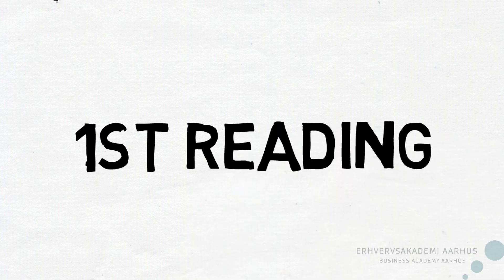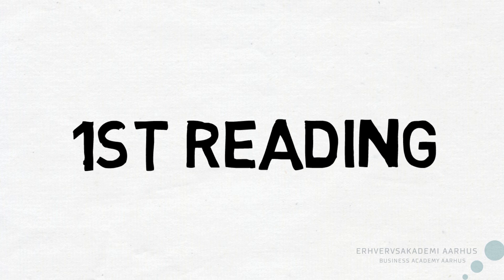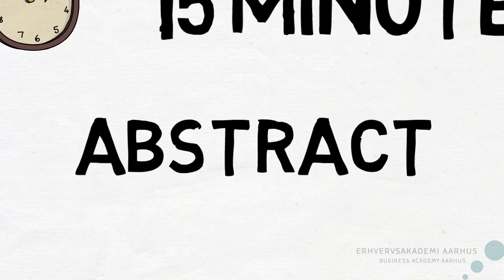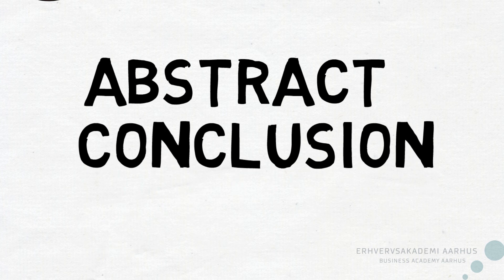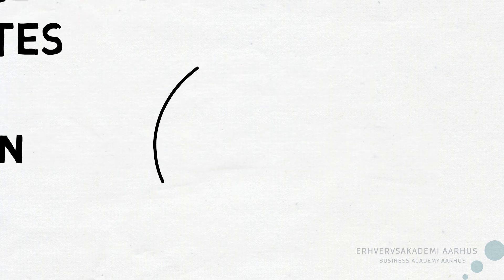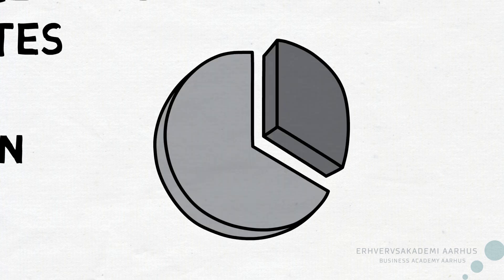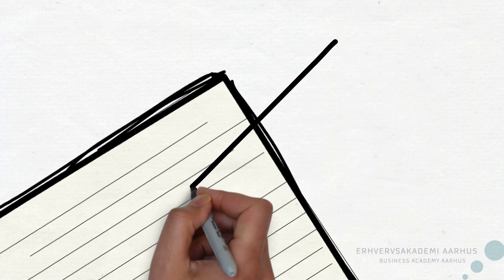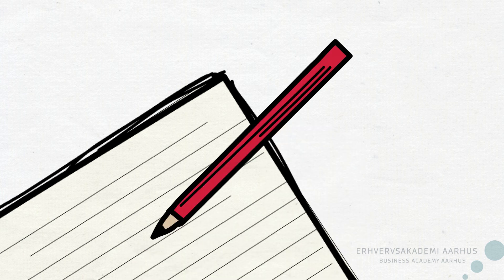If the article is part of your syllabus, you can skip this first step, but as it will provide a fundamental overview of the text, the 15 minutes are well spent. If the article is something that might be useful for a topic of your own choice, this step will help you decide whether the article is relevant or not. Start by reading the abstract and conclusion. If the text is relevant, take a look at the tables and models presented to get an overview and a basic understanding. Conclude the first reading by outlining a summary of what you've learned using your own words.